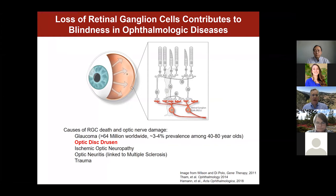As was alluded to in the clinical session that we just completed, the retinal ganglion cells, which convey the visual information back to the brain, are key to the pathophysiology of optic neuropathy. Loss of retinal ganglion cells contributes to blindness in many ophthalmic diseases, including glaucoma.